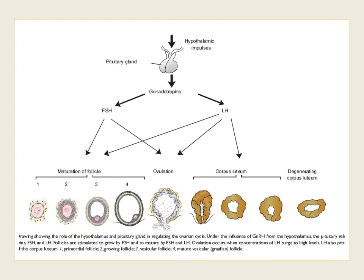This figure shows the role of the hypothalamus and pituitary gland in regulating the ovarian cycle. Under the influence of the gonadotropin-releasing hormone from the hypothalamus, the pituitary releases the gonadotropins — follicle-stimulating hormone and luteinizing hormone. The follicles are stimulated to grow by FSH, and they are stimulated to mature by both follicle-stimulating hormone and luteinizing hormone.